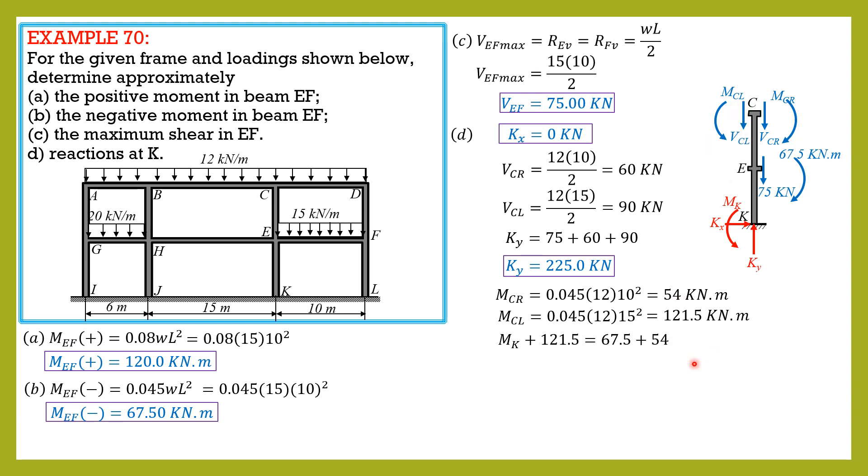Finally we can now solve MK. So MK plus MCLF which is 121.5 kilonewton-meters, so MK equals 67.5 plus MCR which is 54. MK plus 121.5 equals 67.5 plus 54. That's it for this problem. I hope that you were able to understand and follow the solutions as well as the explanations.